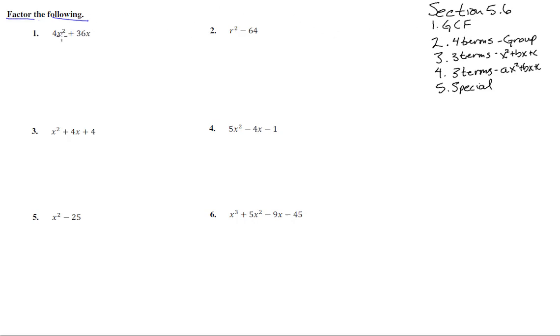Number one: let's factor out the greatest common factor. It looks like there's a 4 and an x that we can take out, and that gives us x plus 9. That's as far as we can go.